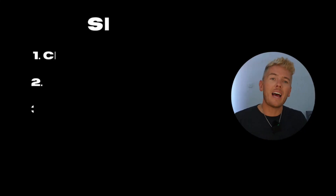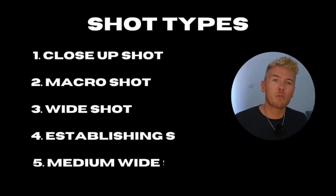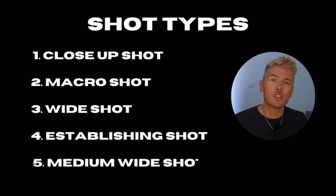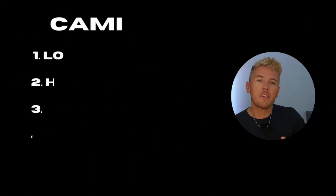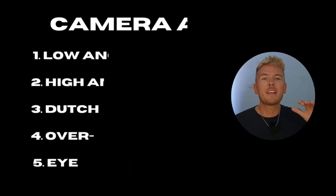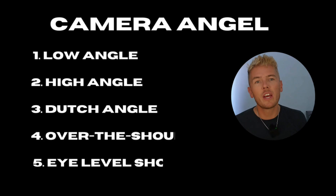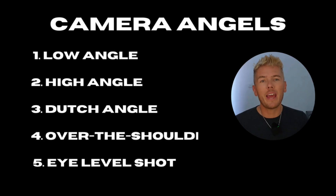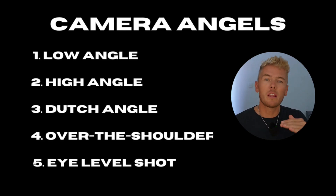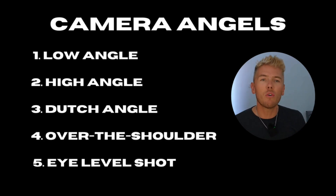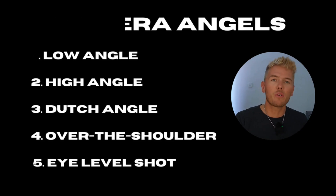Tip four: to achieve a specific shot, describe the type of shot and the angle. You can ask for a close-up shot, macro shot, wide shot, or establishing shot. On top of that, you can always add types of angles — low angle, high angle, or Dutch angle.